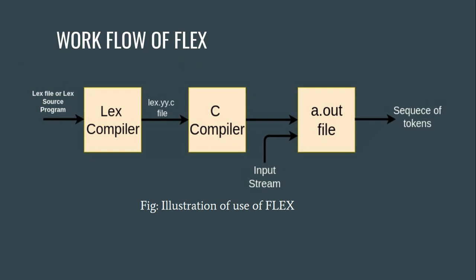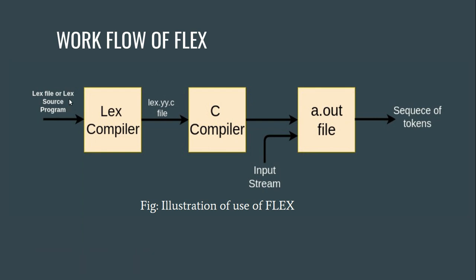Here is the workflow of Flex. First, Flex takes a source program with a dot-l or dot-lex file extension. Then the lex compiler compiles the lex file and produces a new file with the lex.yy.c extension. Then the C compiler compiles this C file and produces an executable, which takes input streams from the user and produces a series of tokens.